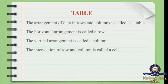A part where the row and the column meet is called a cell. In the tabular column, every row and column meet at a point, and that point is called a cell.